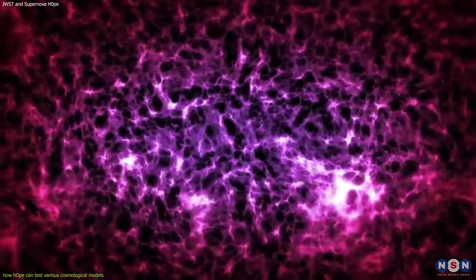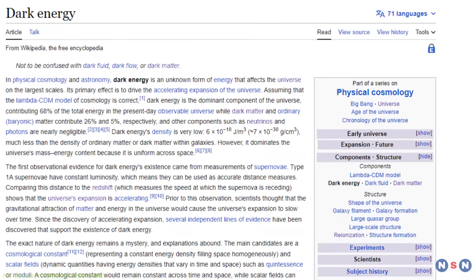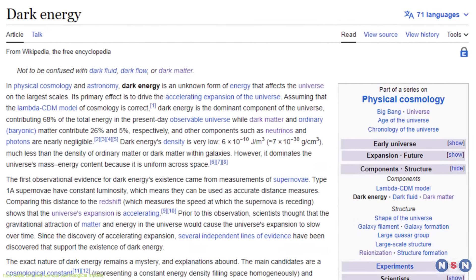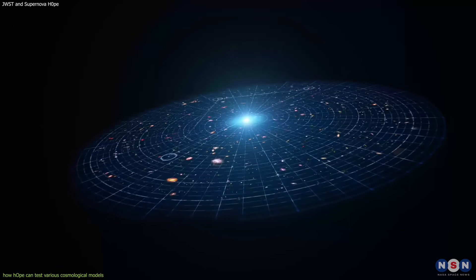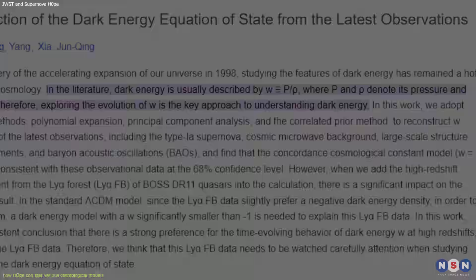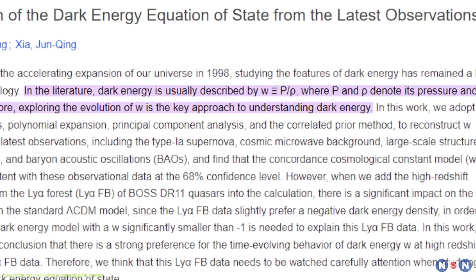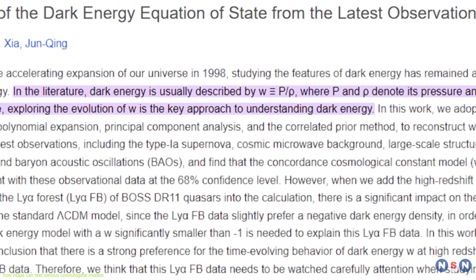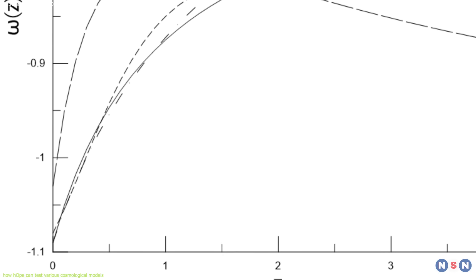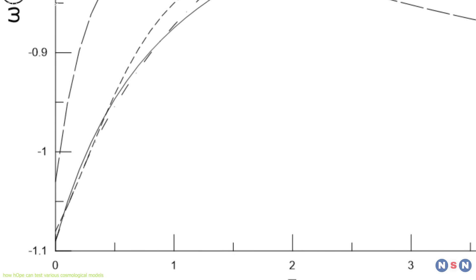One of these parameters is dark energy, which is a mysterious form of energy that makes up about 70% of the universe and causes its accelerated expansion. It is usually described by an equation of state parameter called W, which relates its pressure and density. The simplest model of dark energy assumes that W is constant and equal to minus one, which corresponds to a type of dark energy called cosmological constant or vacuum energy.